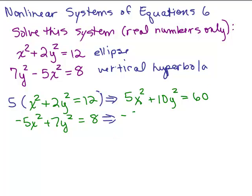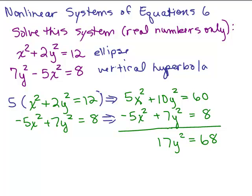This second equation I don't have to multiply by anything. If you want to think of multiplying it by something, you could think you're multiplying by 1. So I have the same equation. So if I add both sides to get a new equation, my x squared terms add up to 0. So I've got 17y squared equals 68.